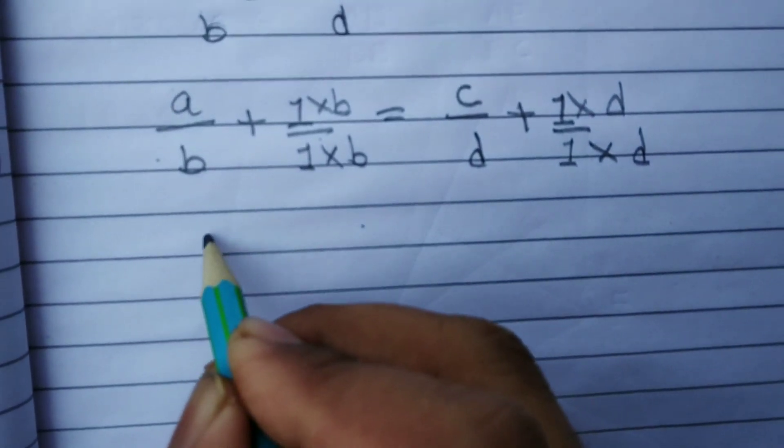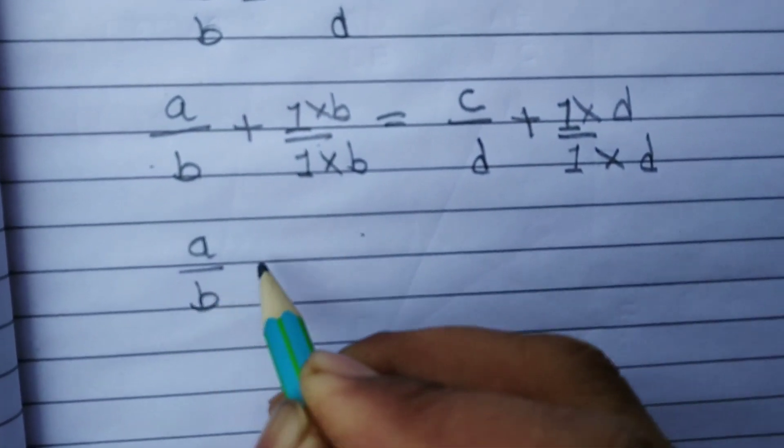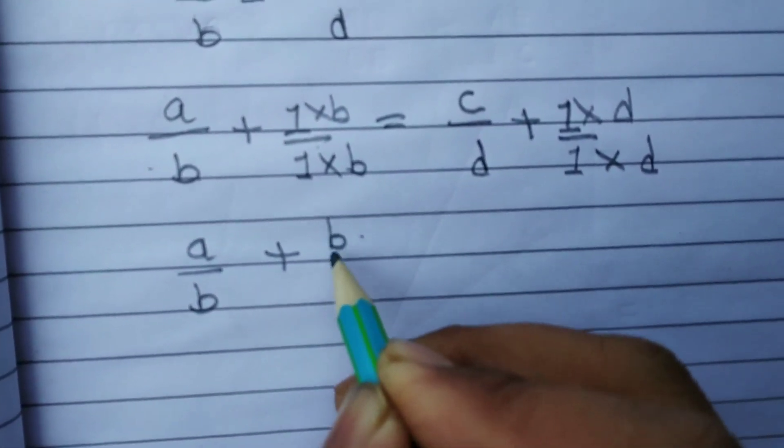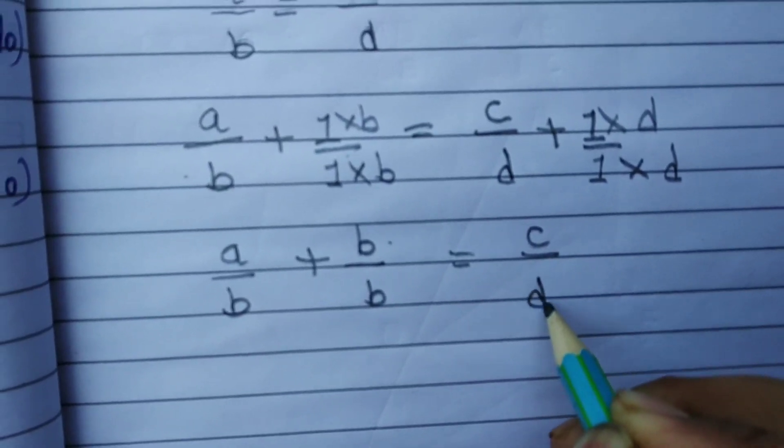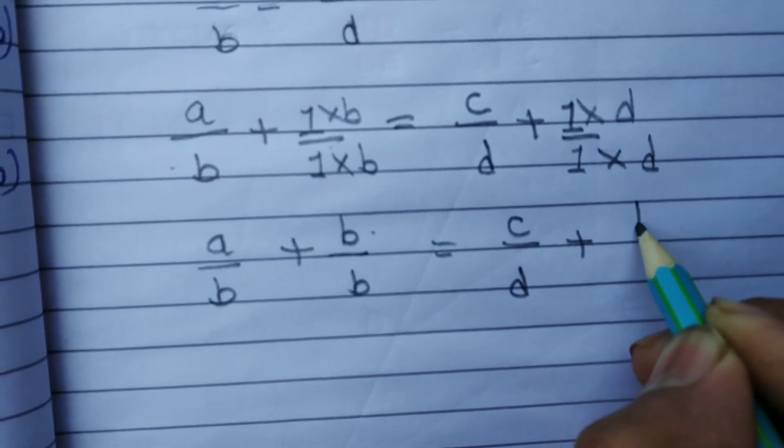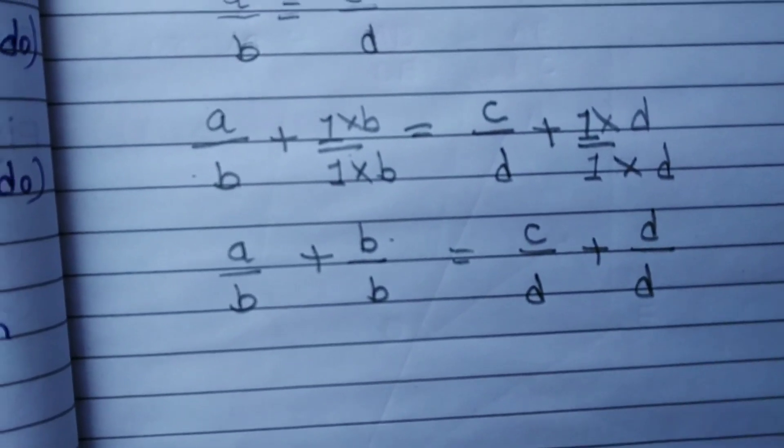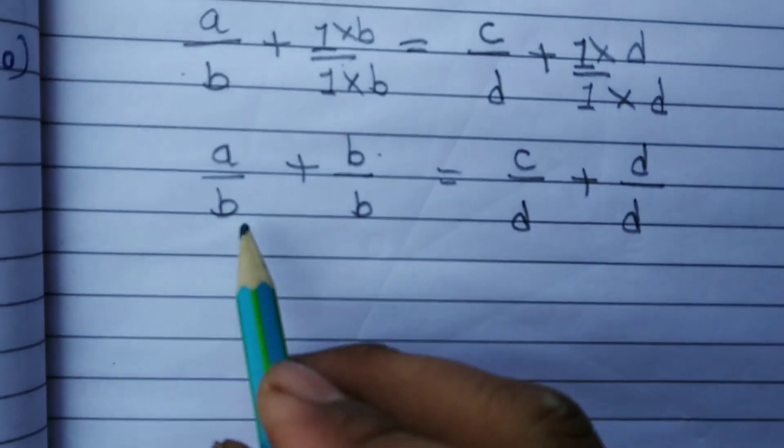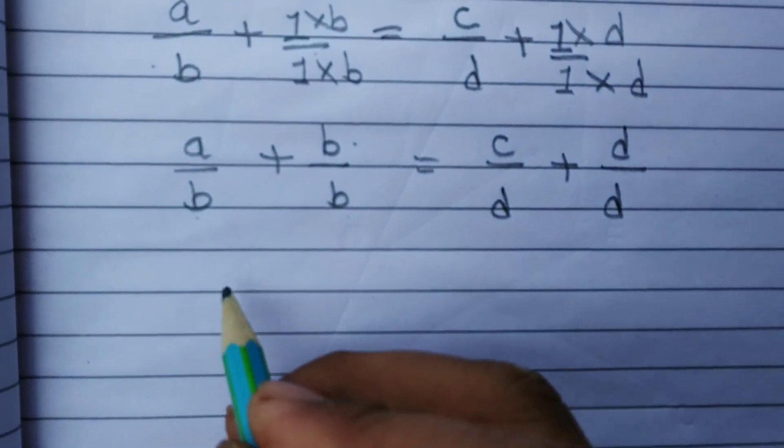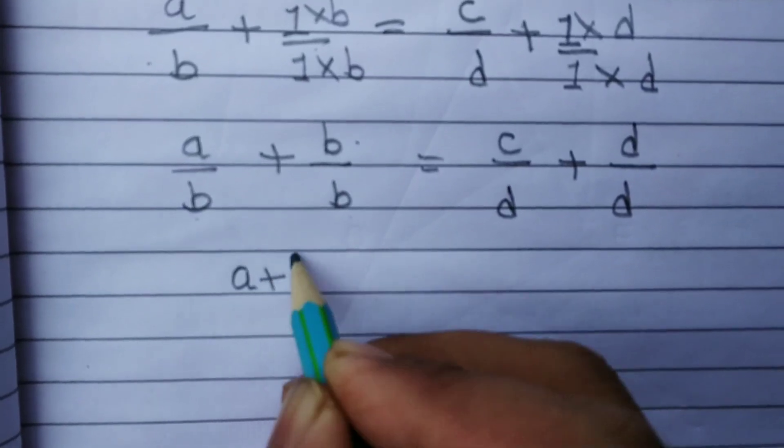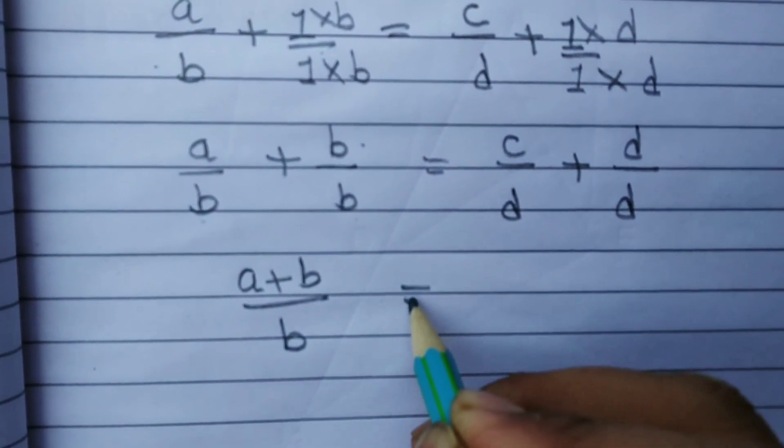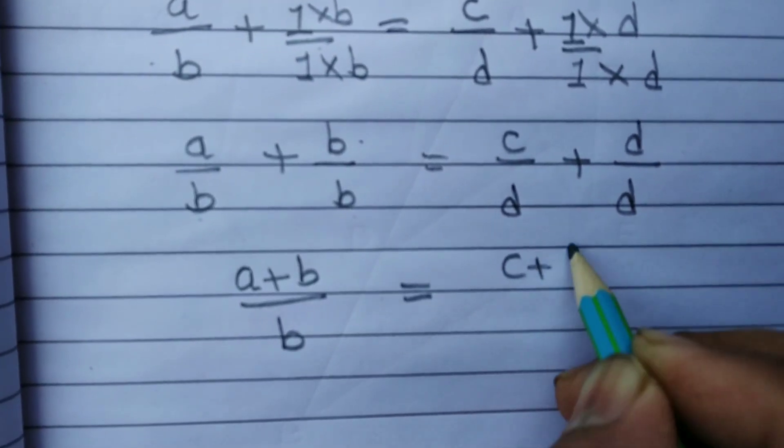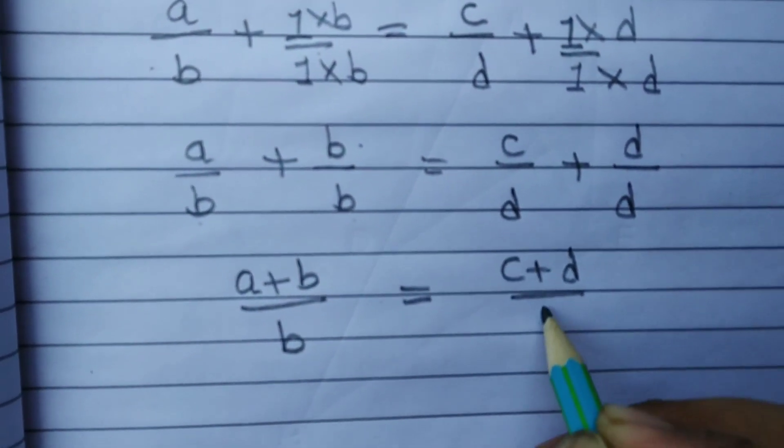So in the next step: a upon b is equal to b upon b, is equal to c upon d plus d upon d. Now the denominators are equal, so we can add: a plus b, one time denominator b, is equal to c plus d upon one time d.